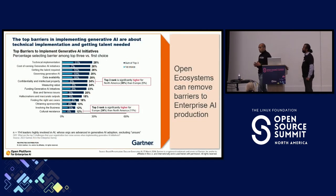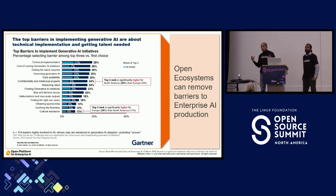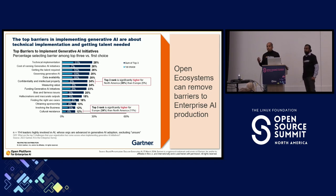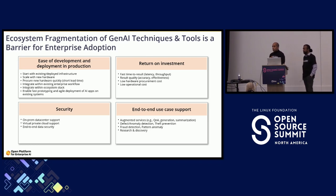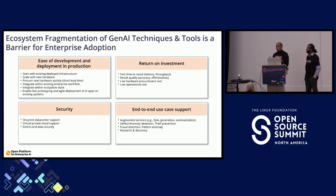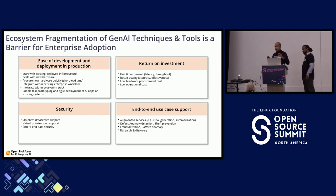Gartner released a survey which talks about what are some of the barriers for the adoption of enterprise AI. As you are building Gen AI solutions, they called out some of the reasons relevant to make Gen AI adoption go faster. Ease of development and deployment is one of the primary reasons — how do I develop on my local machine, and then how do I scale it across cloud, data center, or edge?